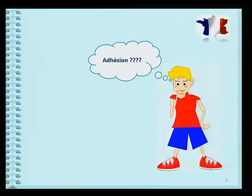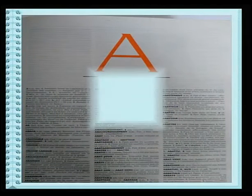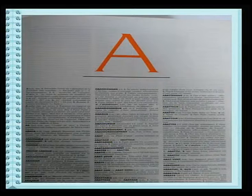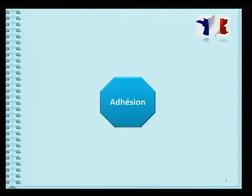Tu me diras que ce n'est pas si facile de chercher le mot. Ce dictionnaire a beaucoup de pages. C'est comme chercher une aiguille dans une boîte de foin. Mais tu as de la chance. Cherchons ensemble le mot. Il te faut identifier la première lettre de ton mot adhésion, car les mots dans le dictionnaire sont en ordre alphabétique. La lettre est écrite en haut de la page, comme tu peux le voir. Mais ils sont nombreux, les mots en A.